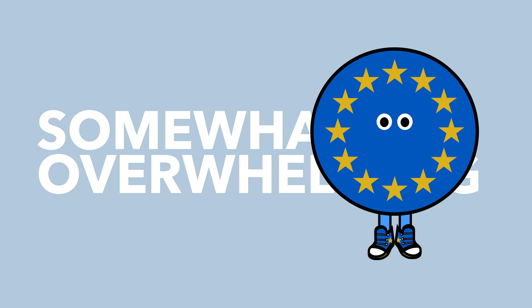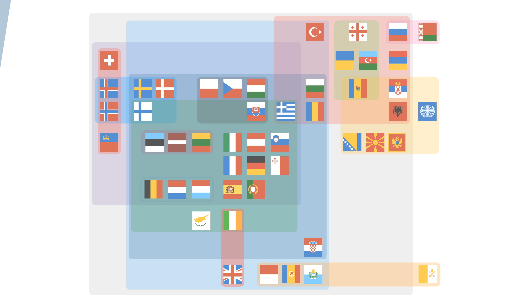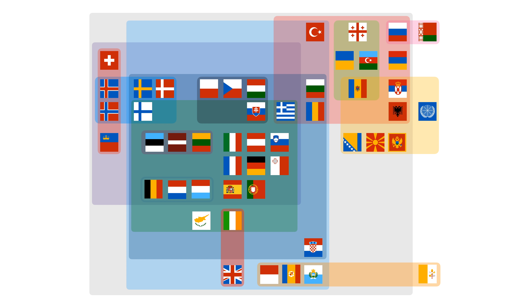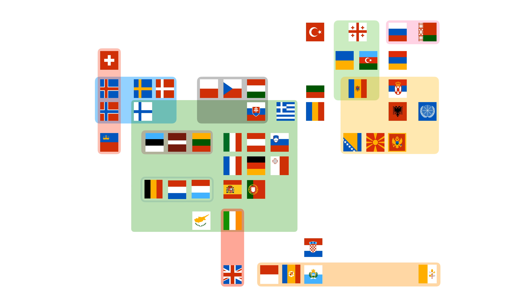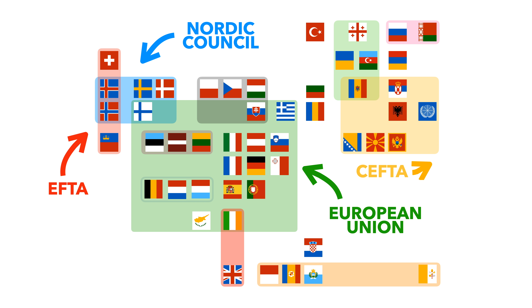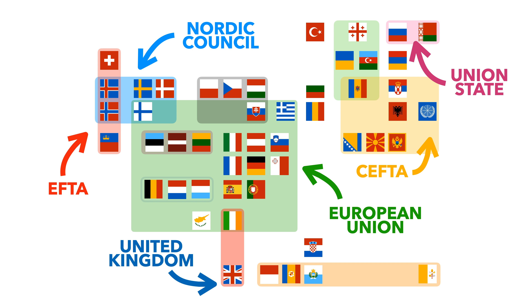The diagram is somewhat overwhelming, which is pretty appropriate, considering that's how many people feel about the EU generally. So in this video we're going to demystify it, explain what all of these different groupings mean, how the countries fit together, and interestingly, where the UK ends up in all of this mess.